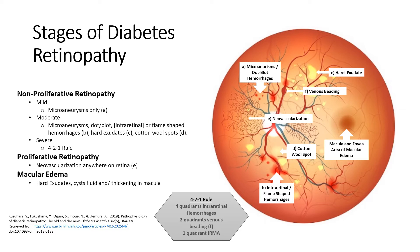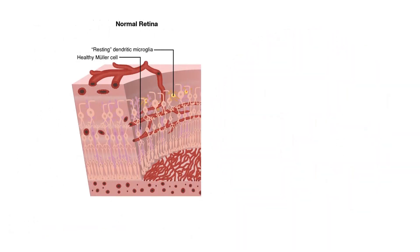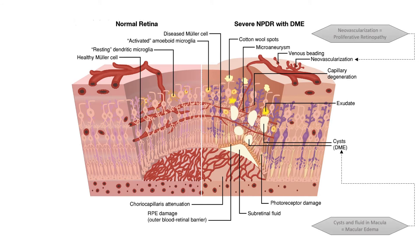The 4-2-1 rule is an indication of severe non-proliferative retinopathy. This cross-section shows a normal retina and the location where clinical signs of retinopathy occur in the presence of poorly managed hyperglycemia. It is important to remember that fluid leakage and hard exudates in the area of the macula constitute macular edema, and neovascularization is a hallmark of proliferative retinopathy.